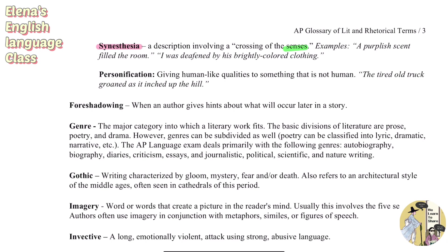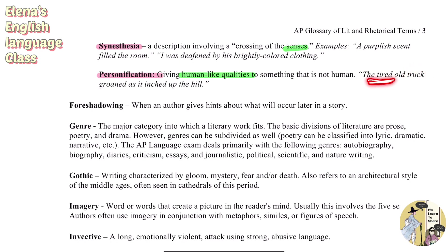Personification is giving human-like qualities to something that is not human. It's easy to memorize because it's basically making something that is not a person behave like a person. For example, 'the tired old truck groaned as it inched up the hill.' Trucks are objects and cannot be tired or groan like a human, but you're giving those human-like qualities to the truck — that is personification.